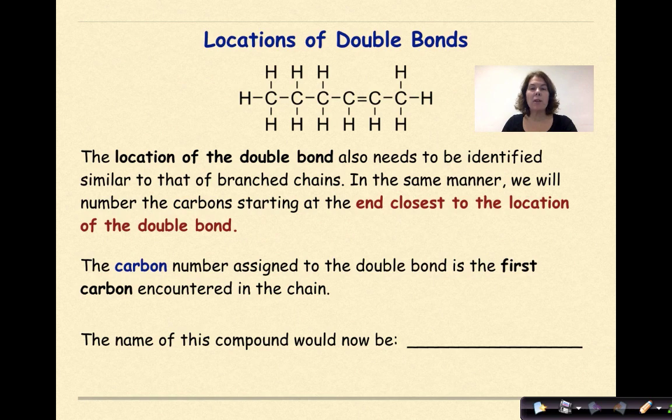Location of double bonds. The location of the double bond also needs to be identified, similar to that of branching chains. In the same manner, we will number the carbon starting at the end closest to the location of the double bond. The carbon number assigned to the double bond is the first carbon, and that's really important, the first carbon encountered in the chain.